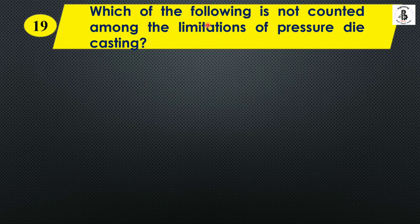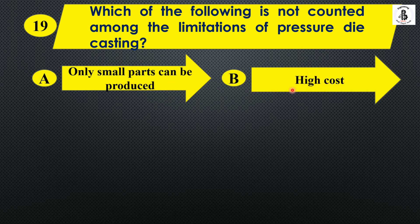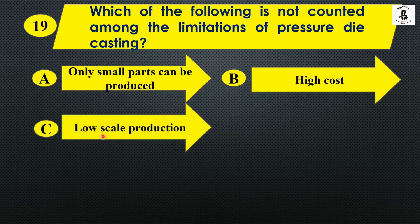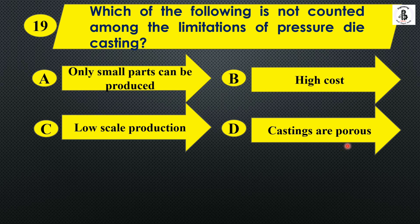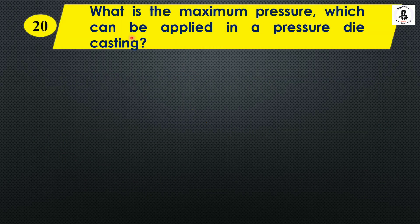Question nineteen: Which of the following is not counted among the limitations of pressure die casting? Option A: Only small parts can be produced, Option B: High cost, Option C: Low scale production, Option D: Castings are porous. Pressure die casting is used for mass production. The equipment needed is not available at low cost, so high cost is a real limitation. Low scale production is not a limitation — in fact, it is the opposite. The answer is Option C: Low scale production.